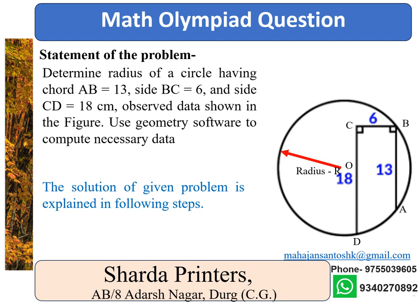A question for students preparing for Math Olympiad: determine the radius of a circle having chord AB equal to 13, side BC equal to 6, and side CD equal to 18 cm. Observe the data shown in the figure and use geometry software to compute the necessary data. Draw a quadrilateral ABCD with the data shown in the figure.